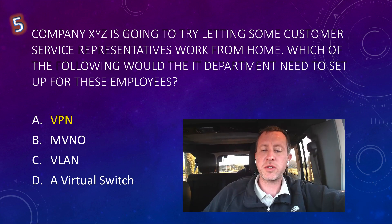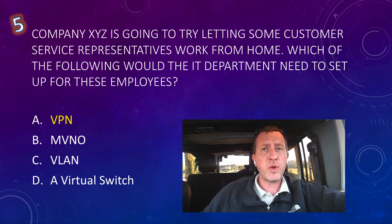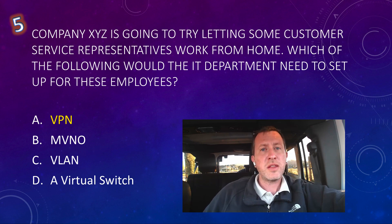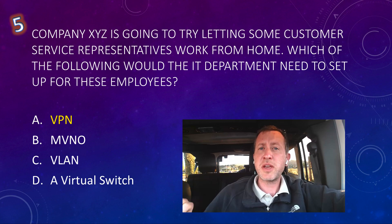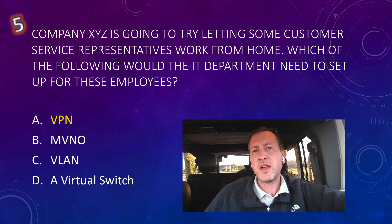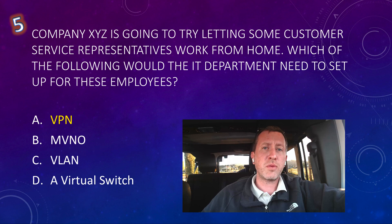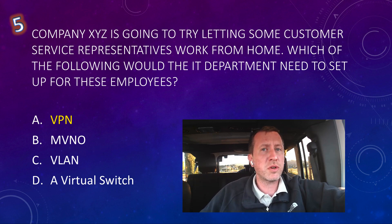Question five: Company XYZ is going to try letting some customer service representatives work from home. Which of the following would the IT department need to set up for these employees? A VPN — virtual private network — essentially tunnels through the internet, connecting to the company's network, and treats the employee's connection exactly as if they were sitting in the office. Option B, MVNO, is a mobile virtual network operator — basically when a small company resells wireless service from a carrier like Verizon or T-Mobile. Option C, VLAN, is a virtual local area network used to segment traffic within a network, but that's not what we need here. We're not separating traffic; we're letting people work from home.